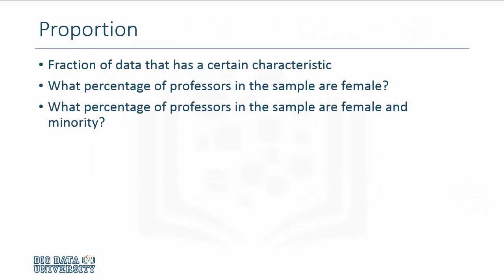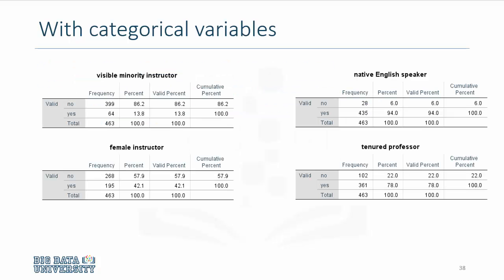For categorical variables, we compute proportions or try to determine the fraction. So a question would be what percentage of professors teaching at a university are female professors. So that's a proportion or fraction, and we compute this for categorical variables.